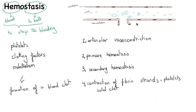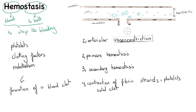The major idea here is that first, when an injury happens, the first reaction is vasoconstriction — to narrow the lumen of the blood vessel so that less blood flow comes to the site of injury and therefore we have less bleeding.